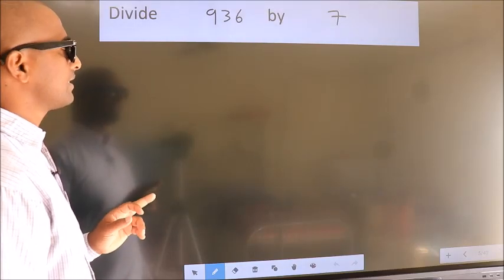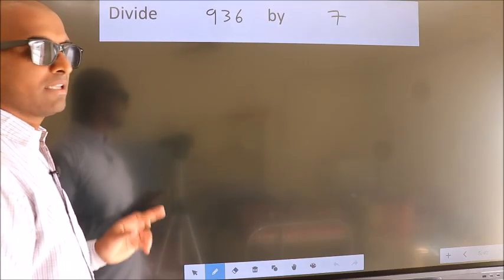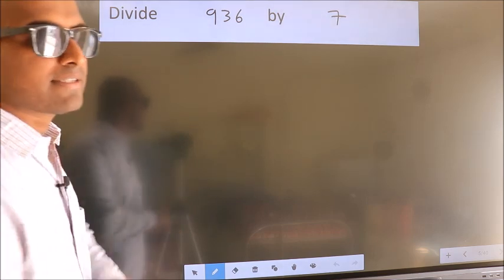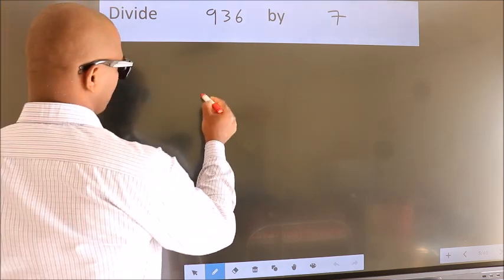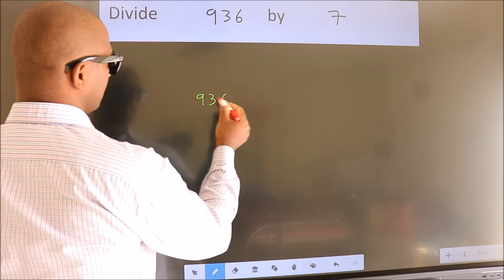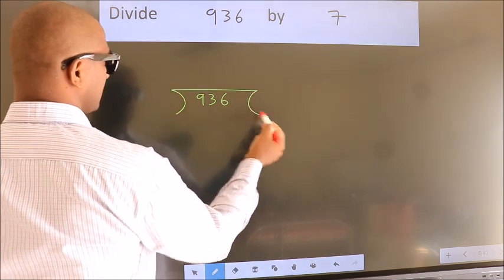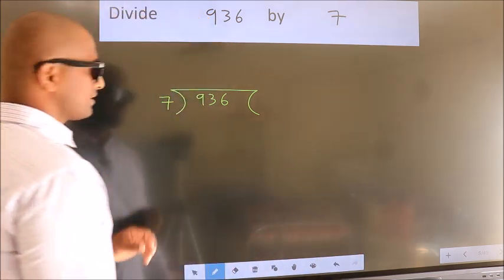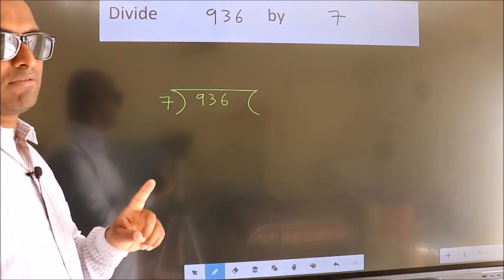Divide 936 by 7. To do this division, we should frame it in this way. 936 here, 7 here. This is your step 1.